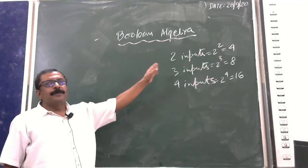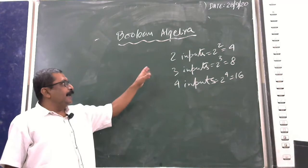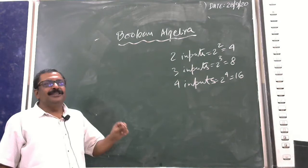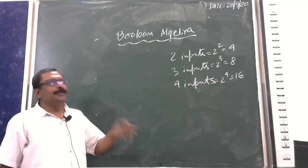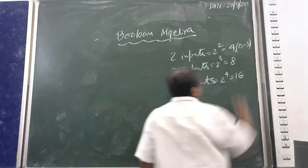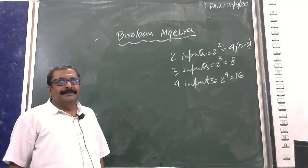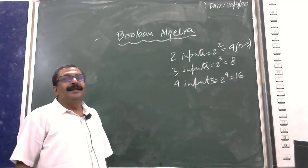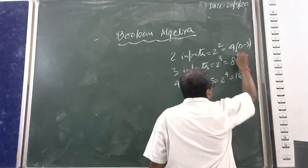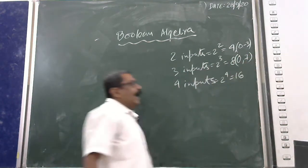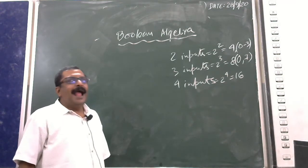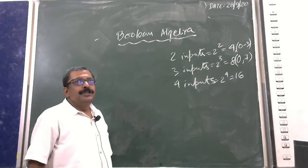In the case of two inputs, the number of combinations is four, and the number range is 0 to 3. For three inputs, the range is 0 to 7. For four inputs, the combinations are sixteen and the number range is 0 to 15.